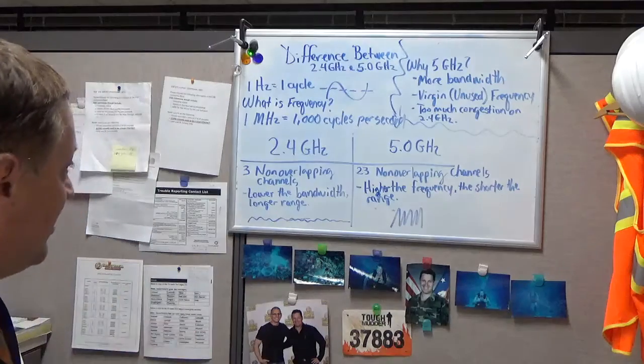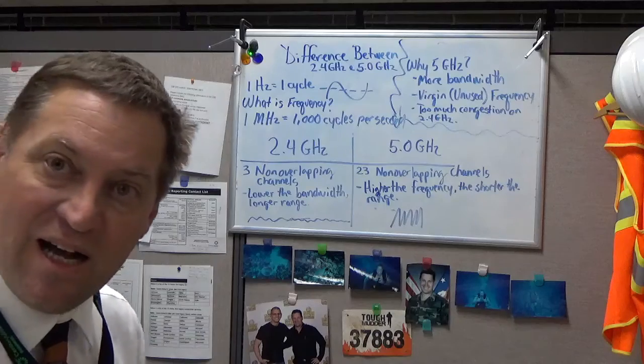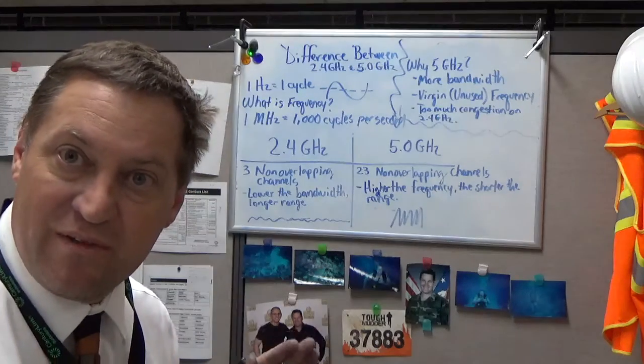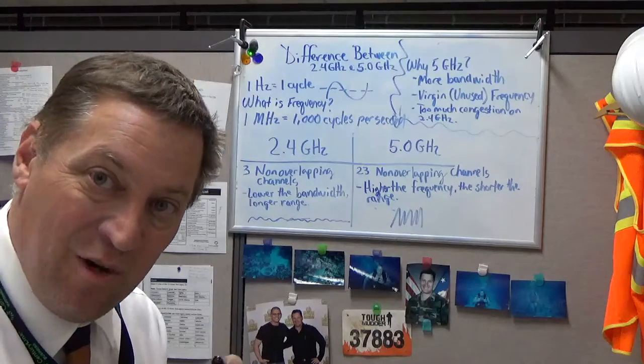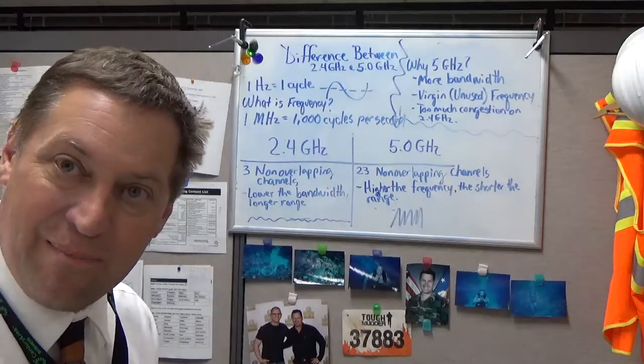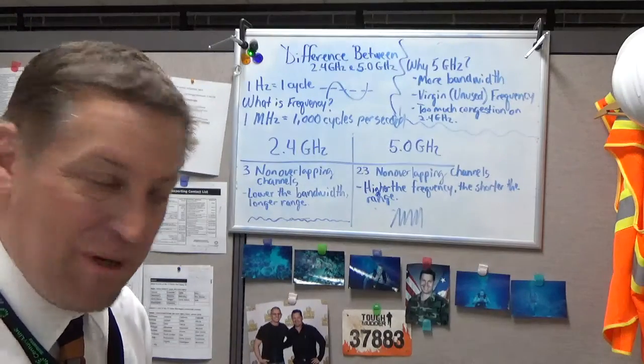Now, let's get into 2.4 gigahertz. 2.4 gigahertz has three non-overlapping channels within that frequency. And if anyone can tell me exactly what the non-overlapping channels are, that'd be great. I'd love to hear that. Just send it to my LinkedIn.